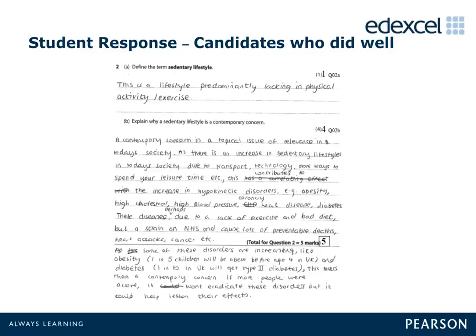The first question we shall consider is question 2 on page 3 of the question paper. This was a straightforward question as candidates were required to define the term 'sedentary lifestyle.' They then had to explain why a sedentary lifestyle is a contemporary concern. Some learners gave excellent responses, gaining full marks. Credit is given for 2a as the learner states 'a lifestyle that is lacking in physical activity' for 1 mark.